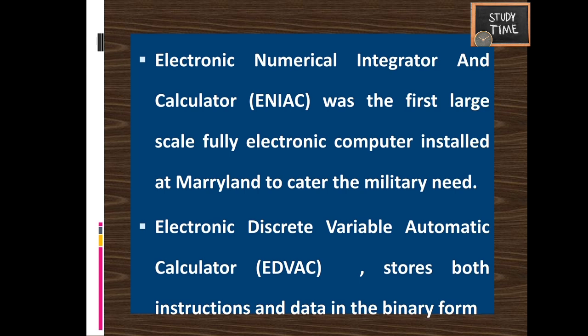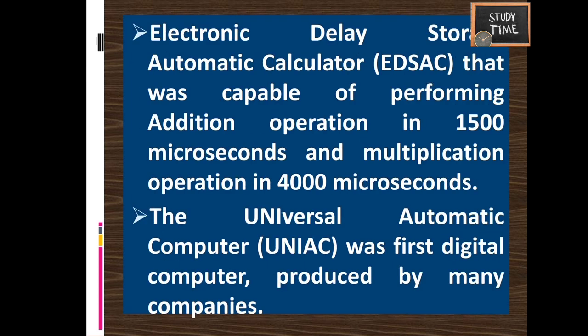EDVAC — Electronic Discrete Variable Automatic Computer — stored both instructions and data in binary form, which is the key difference between ENIAC and EDVAC. EDSAC — Electronic Delay Storage Automatic Calculator — was capable of performing addition in 1500 microseconds and a multiplication operation in 4000 microseconds.